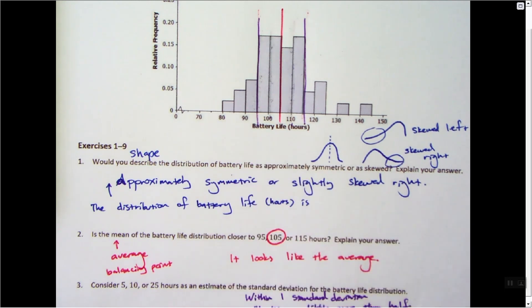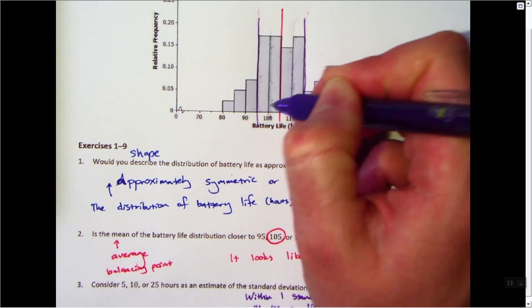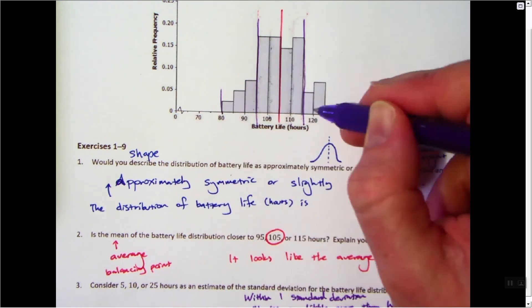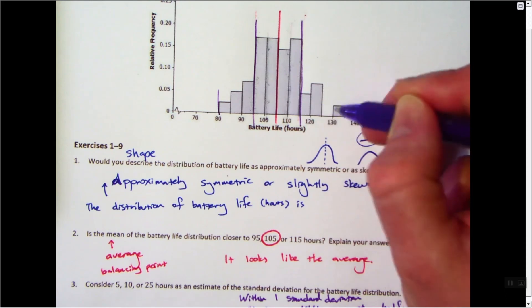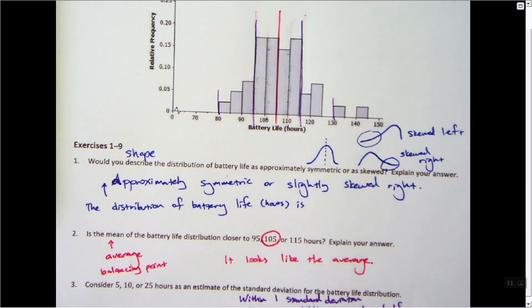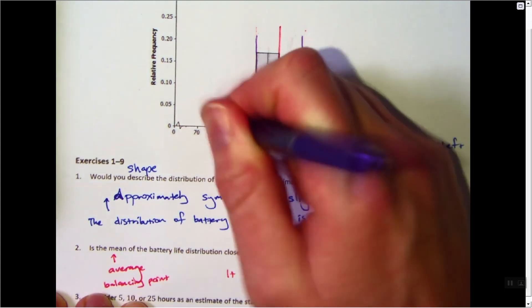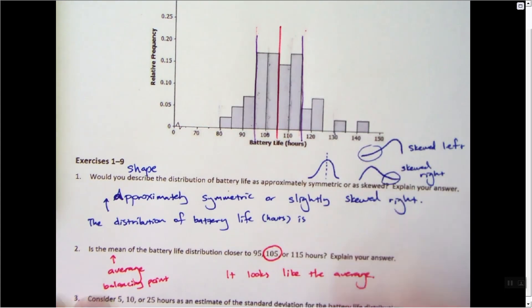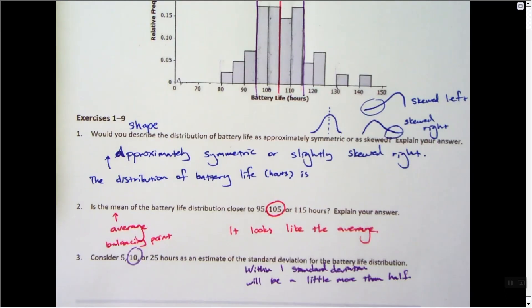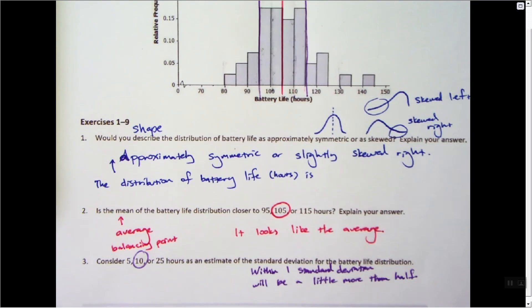25 would be, let's see here, 5, 10, 15, 20, 25, like here and here. And that looks like it's way too big. It has most of my data is there, so that's a little too big for my standard deviation. I think that 10 hours is, you know, the common deviation from the mean.